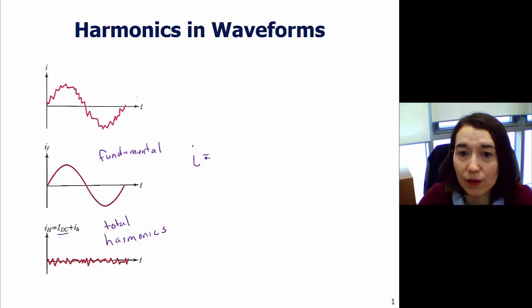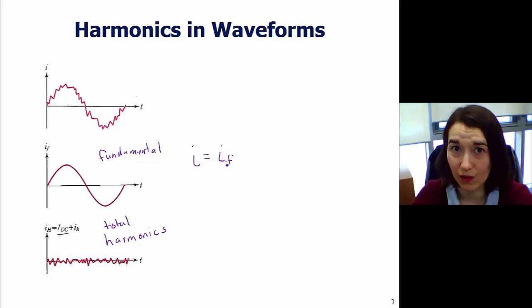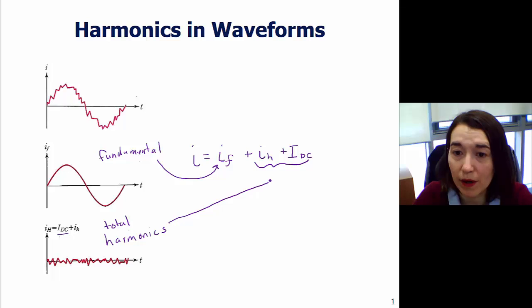In this distorted signal, we can break it down into I equals the fundamental IF. These are all lowercase meaning they are changing with time. We can think about it as fundamental plus its harmonics, plus a DC component. Here it's capital because it's not changing, the RMS value of DC. So we can think of the fundamental as this component, and these two together are the total harmonics.